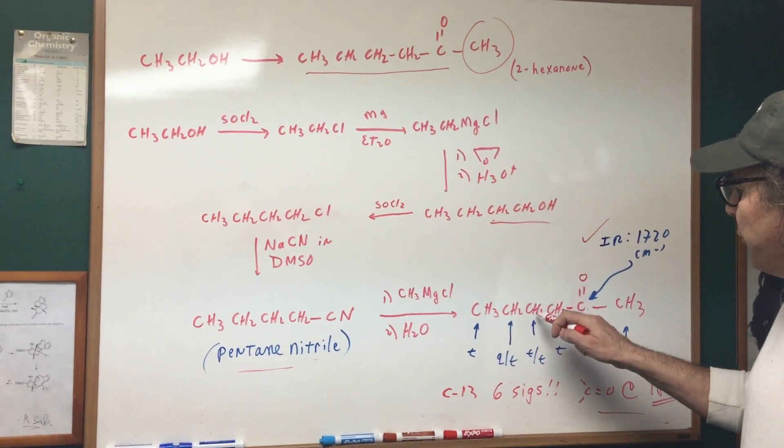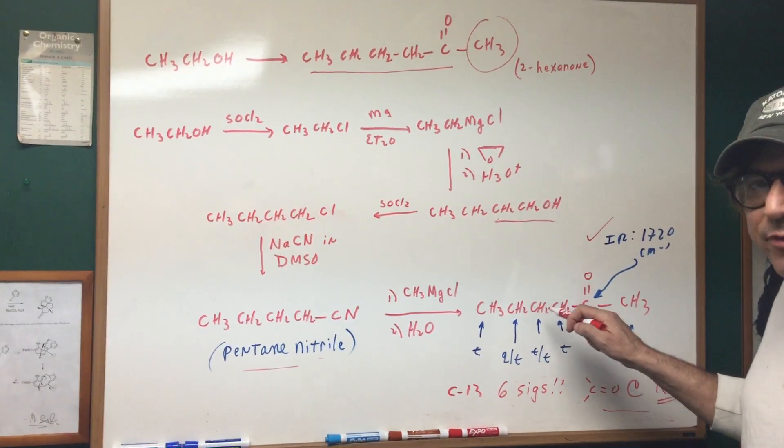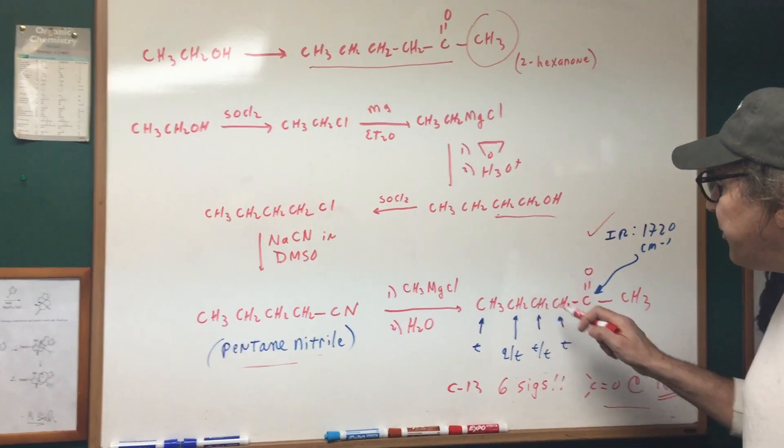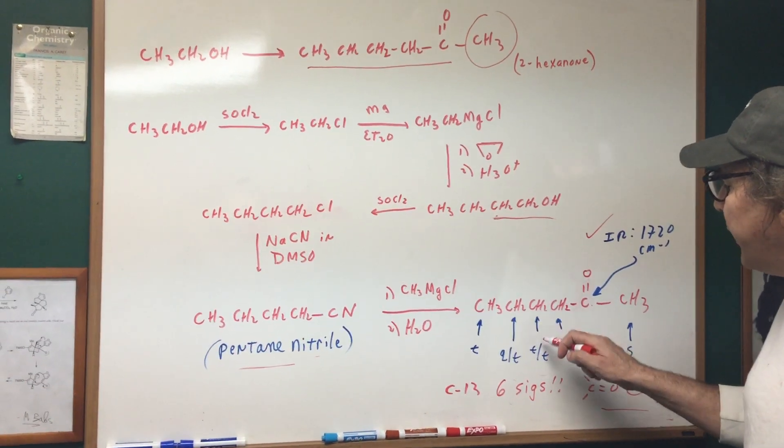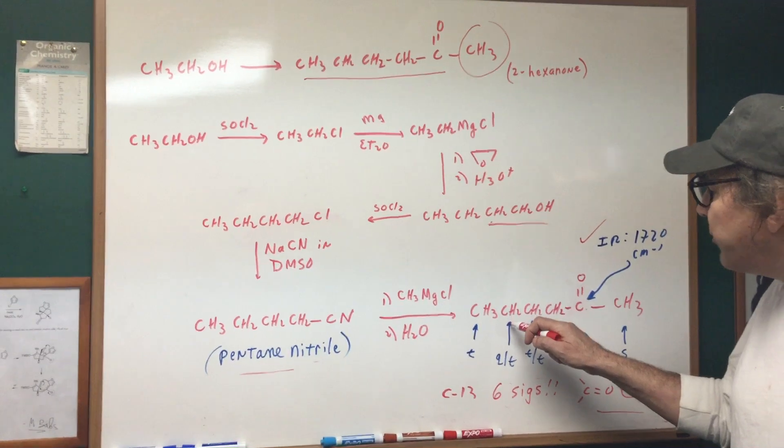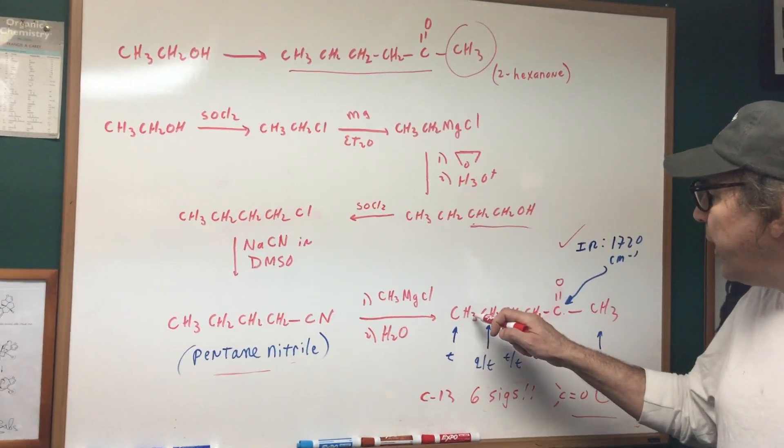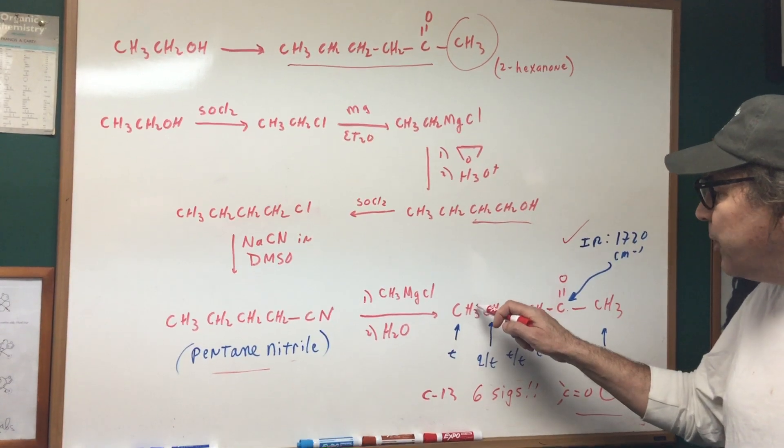This is a hard one. This CH2 is next to two here and two here, and they're both different. So I would use the N plus one rule separately. So this would give a triplet of triplets. Likewise, here's another tough one. This CH2, to the left of me, would give us three H's, so we use the N plus one rule.